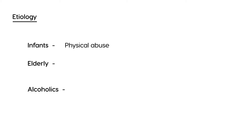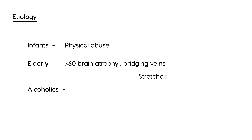The elderly develop this because as a person ages, especially above the age of 60, their brain starts to atrophy. When there is brain atrophy, there are veins that exist in the dura called bridging veins. As the brain atrophies, these veins can easily be stretched, and that stretching can eventually cause rupture — which is responsible for producing the subdural hematoma. This is very commonly tested.